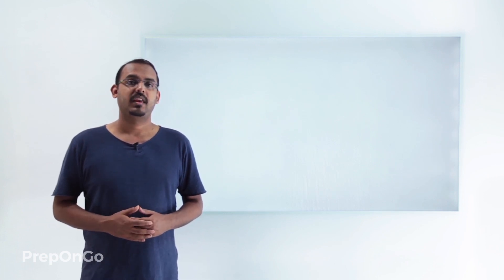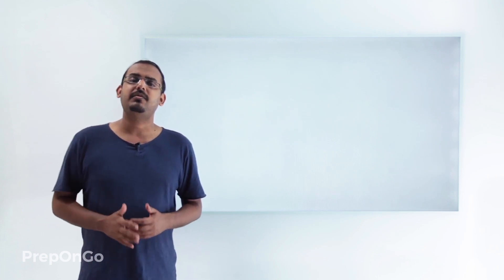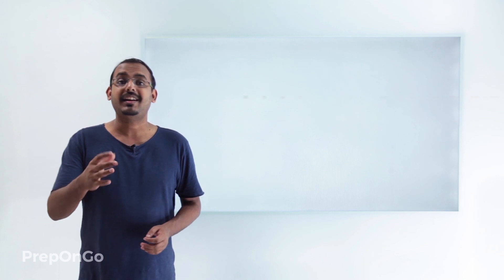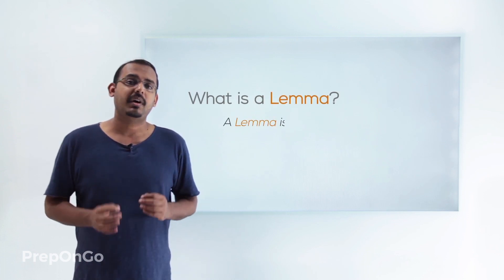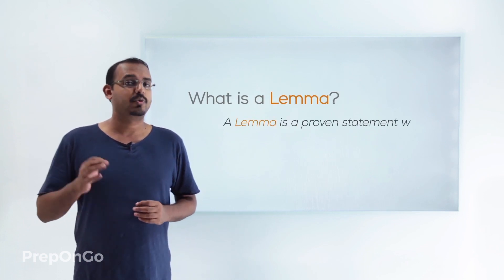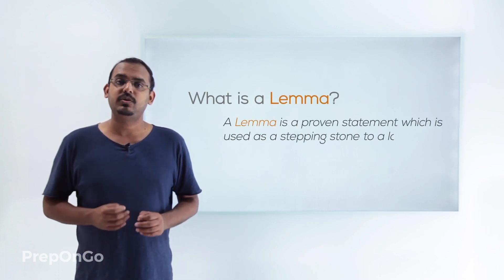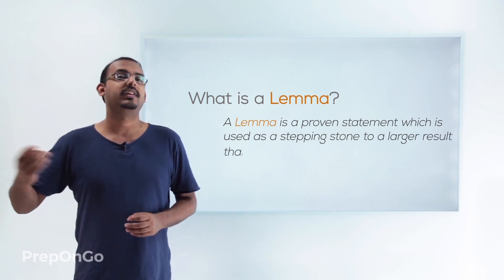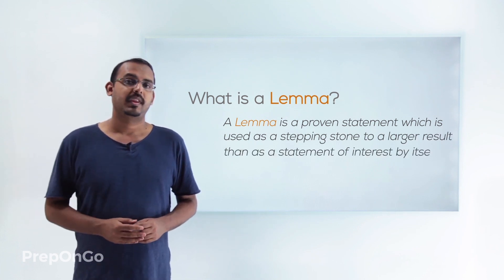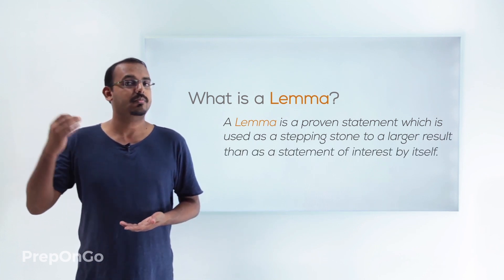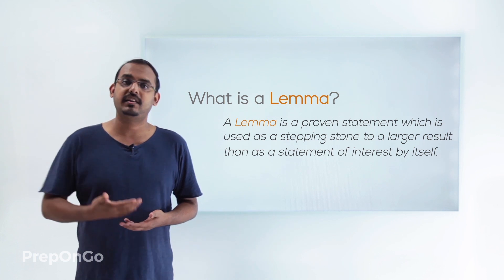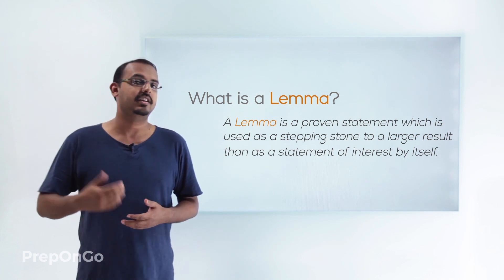Now let's move on to study about Euclid's division lemma. Before that, let's try to understand what a lemma is. A lemma is a proven statement which can be used to prove other statements. In general, a lemma is used in the proving of other important statements.